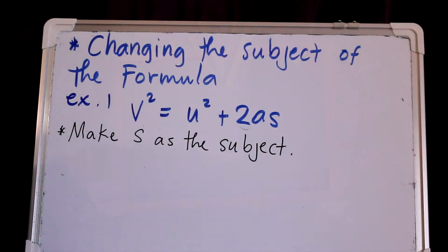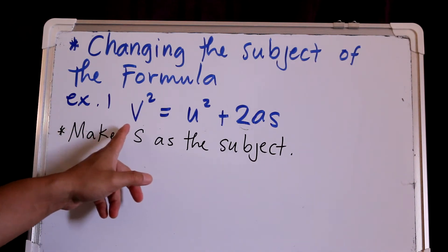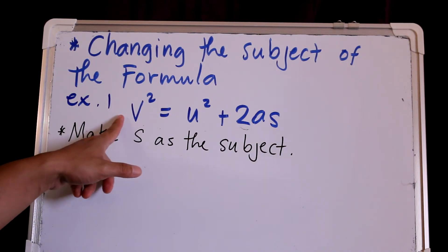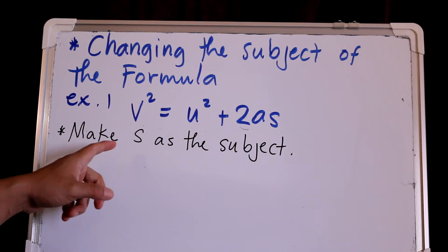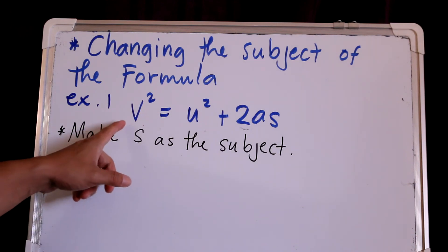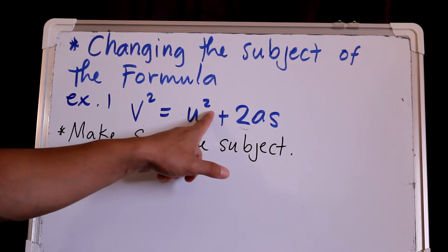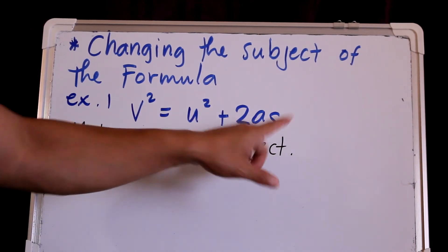How to change the subject of a formula. We have an example here of a formula of velocity and acceleration. V squared equals U squared plus 2AS.